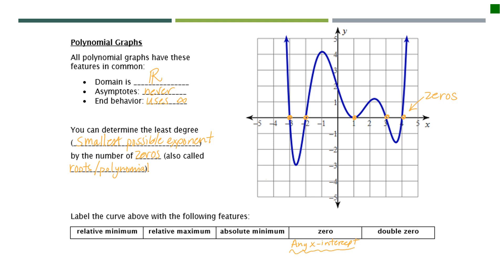So in this particular graph, negative 3, negative 2, positive 1 — it's not 2 — positive 3 and positive 4 are all zeros.